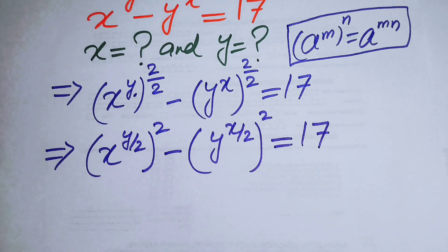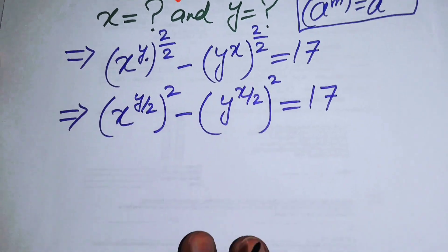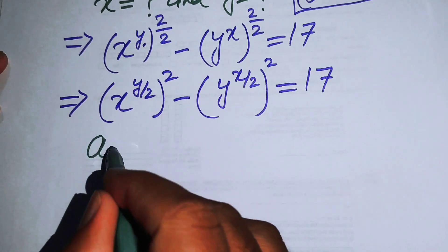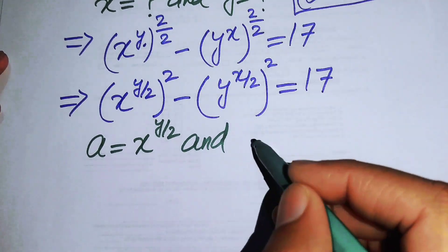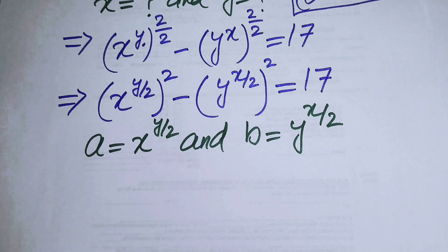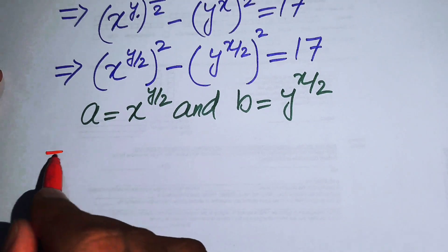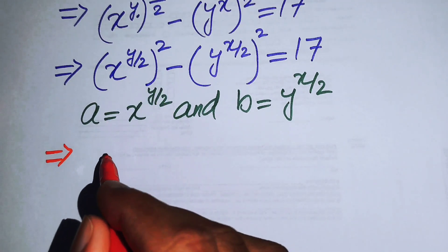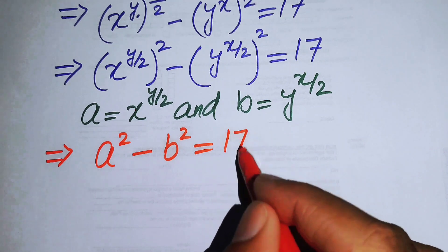In the next step we make substitutions to convert this into a simpler form. Let a equals x to the power of y over 2, and b equals y to the power of x over 2. Substituting these values into the equation, it becomes a squared minus b squared equals 17.